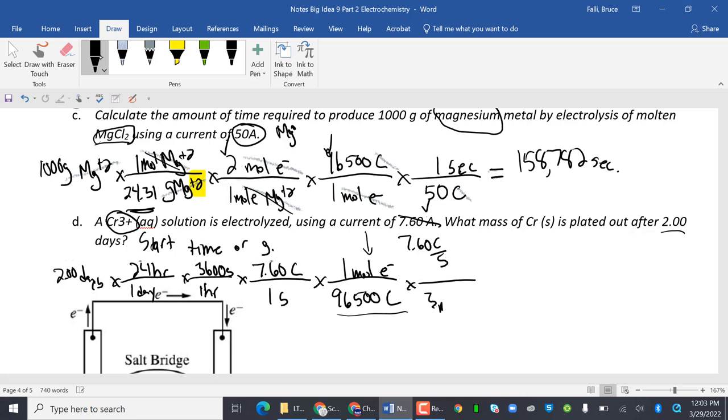So now, moles of electrons. I've got chromium plus three. So there's three moles of electrons in one mole of chromium plus three. And then one mole of chromium plus three is going to be grams of chromium. Oh, no. I don't know the molar mass of chromium. No. Oh, yeah. It was 52 point something. 52.0. And it wants to know what mass of chromium is plated out.